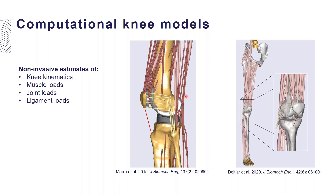One way to get a better understanding of the mechanics of the joint is to create computational knee models. I have shown two examples here — one is a model of a total joint replacement created by Marra some years ago, including bones, muscles, ligaments, and contacting surfaces. With models like these you can compute internal joint kinematics, muscle loads, joint loads, and ligament loads. However, one of the requirements for building these models is that you know the mechanical properties of each ligament: specifically the stiffness of each individual ligament bundle and the slack length — the length at which the ligament starts to take up force.